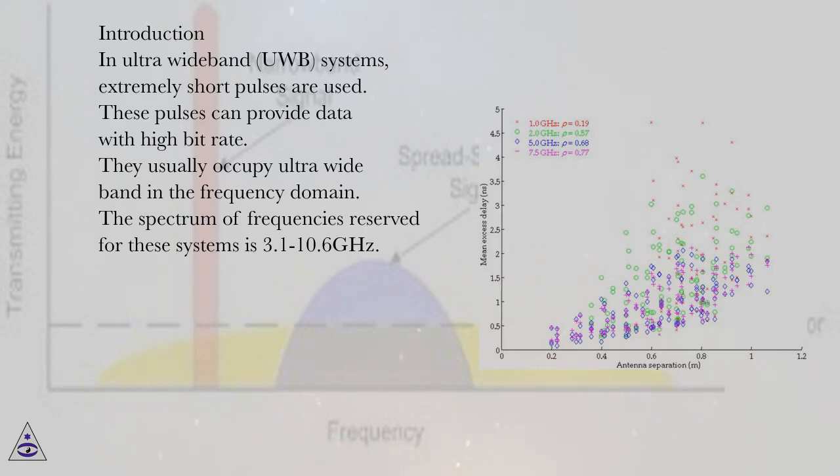Introduction. In ultra-wideband (UWB) systems, extremely short pulses are used. These pulses can provide data with high bit rate. They usually occupy ultra-wideband in the frequency domain. The spectrum of frequencies reserved for these systems is 3.1 to 10.6 gigahertz.